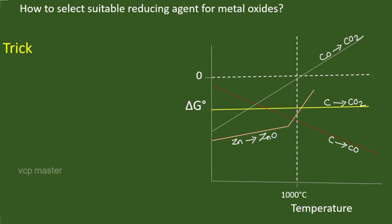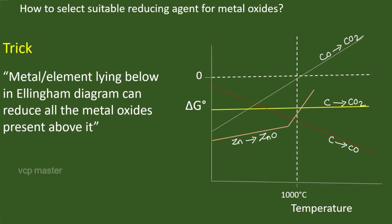This can be predicted directly from the Ellingham diagram using a simple rule: an element lying below another metal oxide line in the diagram can reduce that metal oxide. For zinc oxide, the carbon monoxide line is well above the zinc oxide line, so carbon monoxide cannot be used at low temperatures. The carbon line intersects the zinc oxide line at T1 (oxidized to CO) and at T2 (oxidized to CO₂), so carbon can be used as a reducing agent for zinc oxide above T1°C.